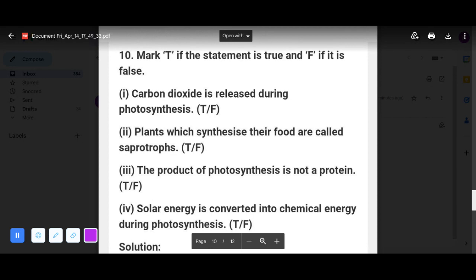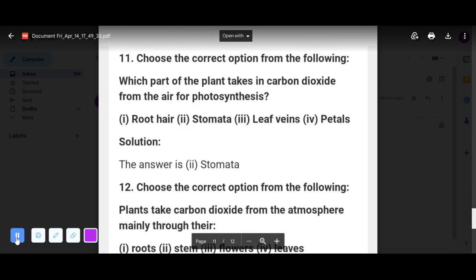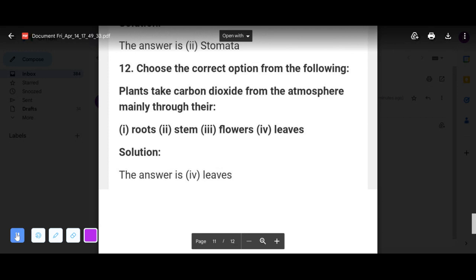Choose the correct option from the following. Which part of the plant takes in carbon dioxide from the air for photosynthesis? It is stomata. Question number 12: plants take carbon dioxide from the atmosphere mainly through their leaf.